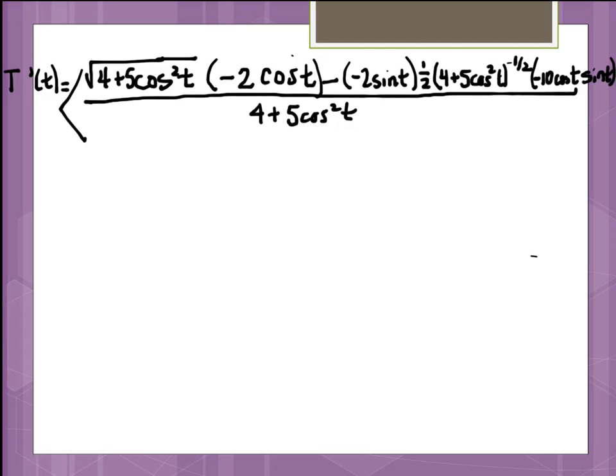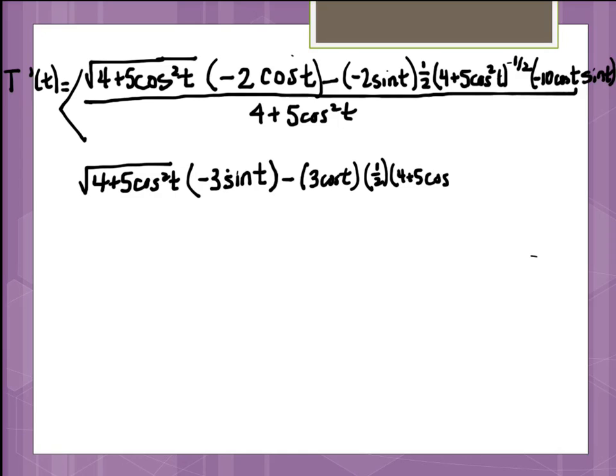It is our first coordinate of our vector here. The other piece is very similar, because it's a very similar kind of function. The only thing that's different is the numerator. So I'm going to have the square root of 4 plus 5 cosine squared t times the derivative of the numerator, which in this one is actually negative 3 sine of t. And then I've got minus the numerator, which is the 3 cosine t times the derivative of the denominator. So I'm going to get another 1 half. I'm going to get another 4 plus 5 cosine squared t to the negative 1 half. And then the derivative of the inside is exactly the same, because it is the same inside function. So it's negative 10 cosine of t sine of t. All over the same denominator as the other piece.